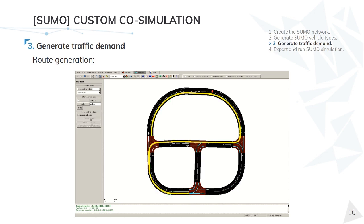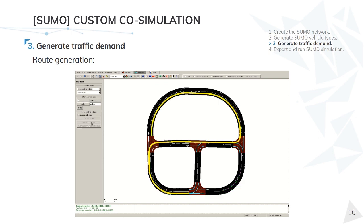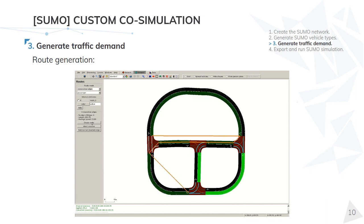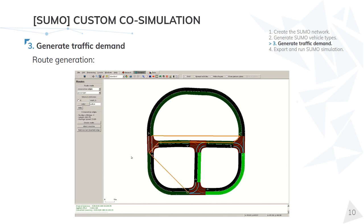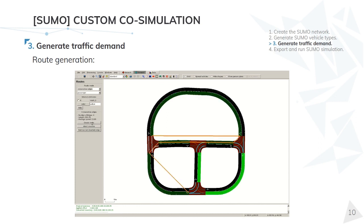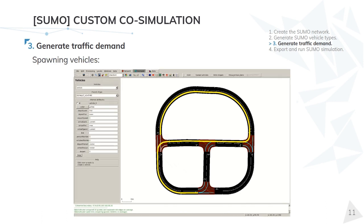Then it's time to generate the traffic demand. There are several ways to do this but the simplest one is by using the NetEdit tool provided by SUMO. When following this approach, we need first to load the generated SUMO network and the SUMO vehicle types in NetEdit, and then we can manually generate routes as we can see in the GIF on the slide. A route in SUMO is simply the definition of all the edges through which a vehicle is going to pass. We can then select the vehicles to be spawned on each route. Since we have loaded the SUMO vehicle types library, we can now select directly CARLA blueprints inside SUMO.